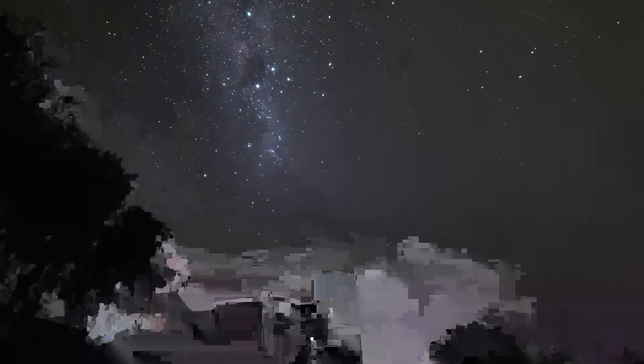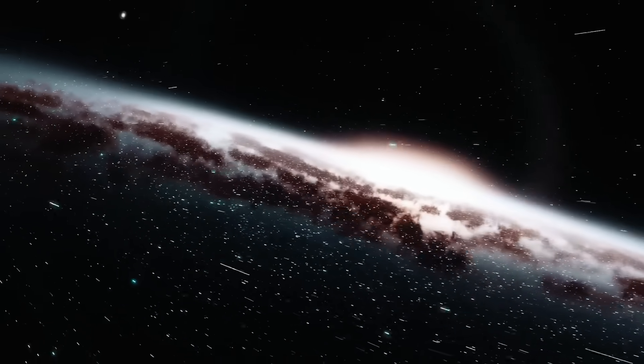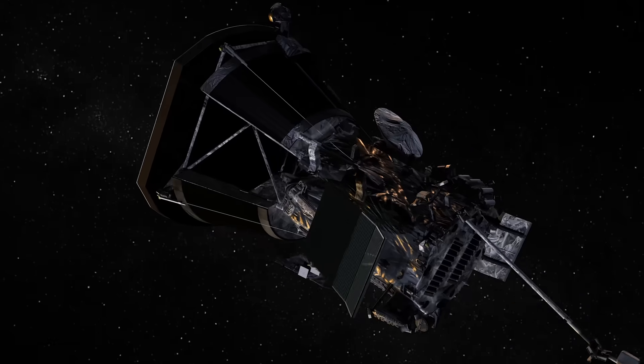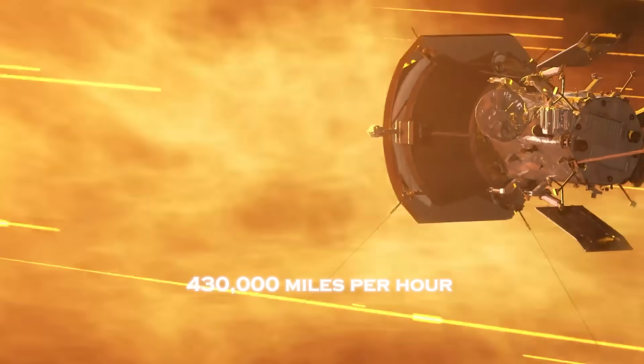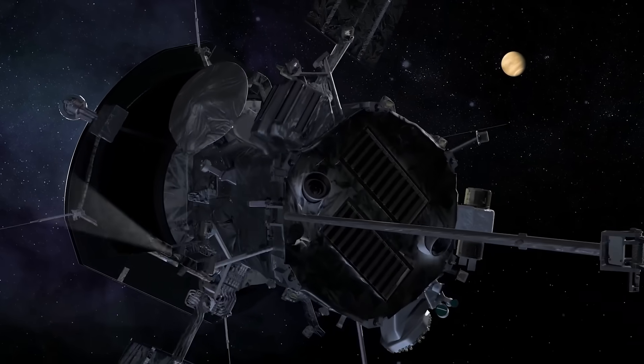To reach the Sun, you don't just launch and coast, you fall. Pulled by a gravity so immense it bends space itself, Parker was accelerated to a velocity no other human-made object has ever reached, over 430,000 miles per hour. That's fast enough to circle Earth 17 times in a single hour.